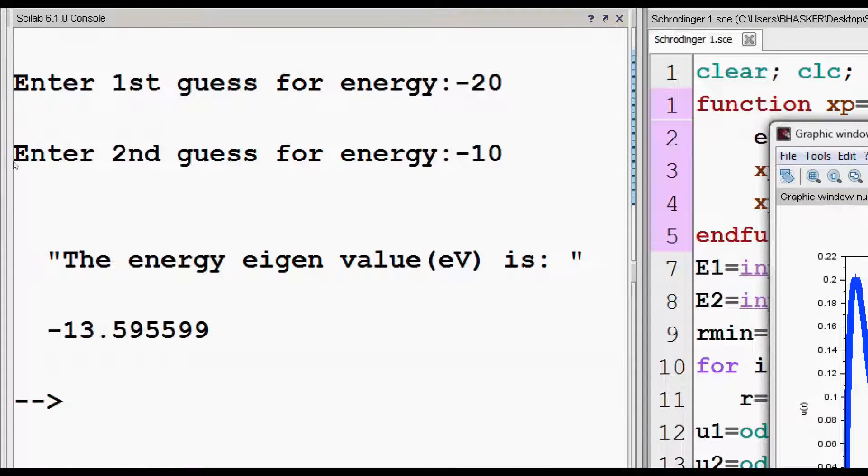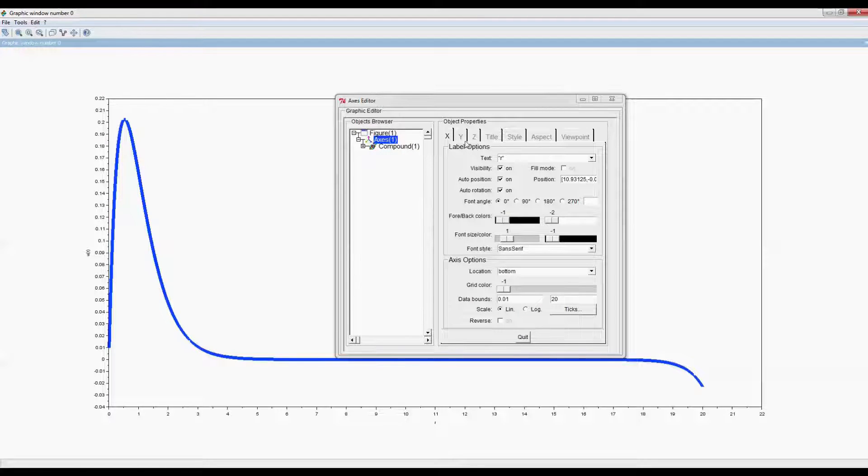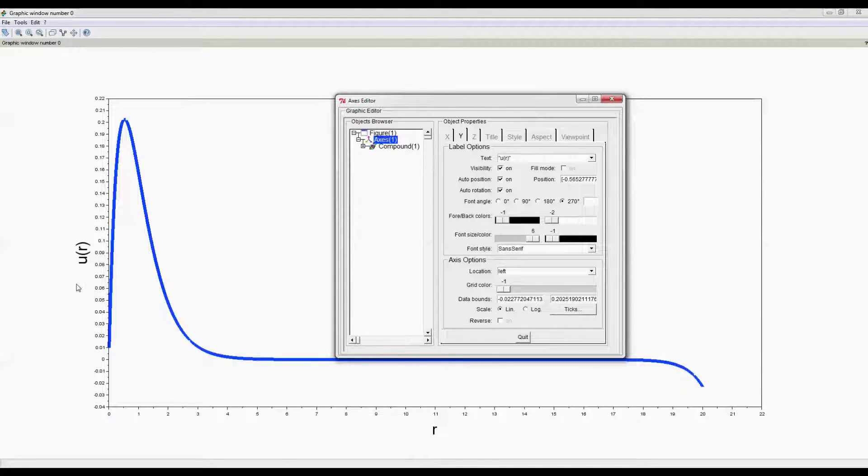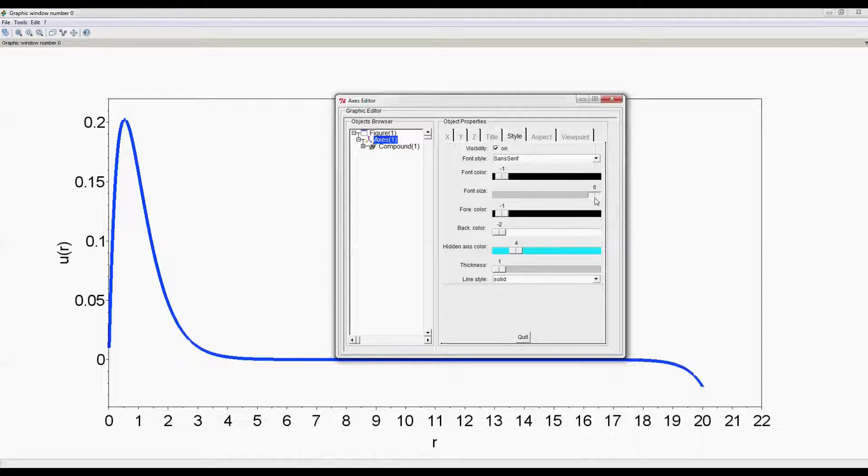Size of these labels and numbers are not visible. Select edit axis properties and increase this font size of x label. Select y axis and increase the size of y label also. Select style and increase the font size from here, and thickness from here.